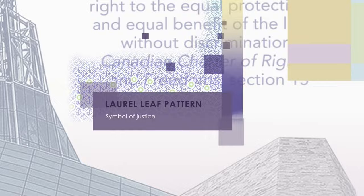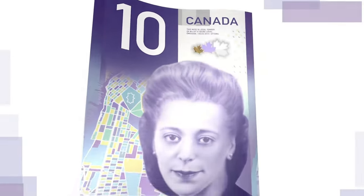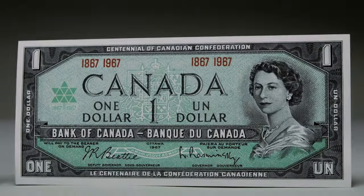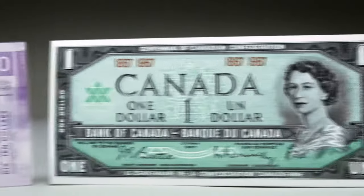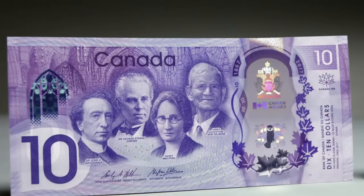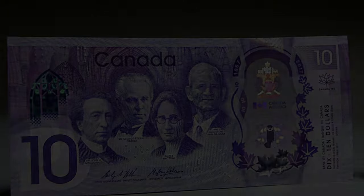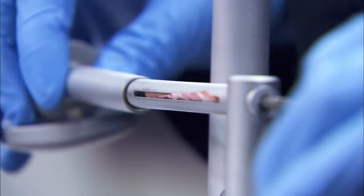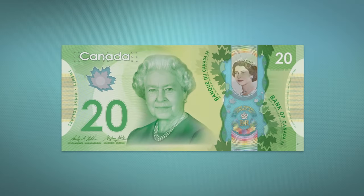It's important to remain vigilant and continue to implement security measures to prevent counterfeiting, so Canada can maintain its reputation as a safe and secure place to do business. Now that we've discussed some of the history of Canadian banknotes, let's discuss the $1,000 bill — the king of Canadian bills and one of the highest denominations ever produced.